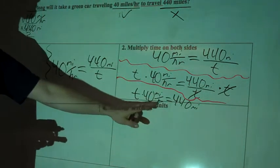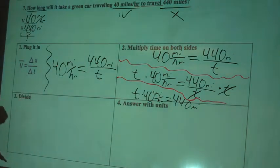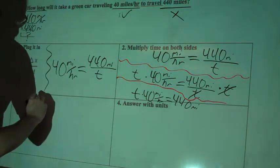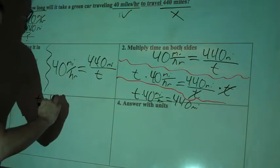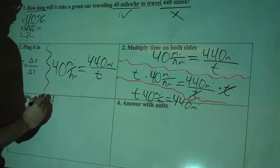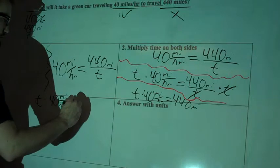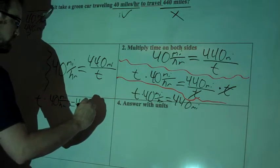And we'll separate that out so it's not so confusing. So T times 40 miles per hour equals 440 miles. Let's rewrite that down here, and we're going to divide, we're going to simplify this even further. So T times 40 miles per hour equals 440 miles.